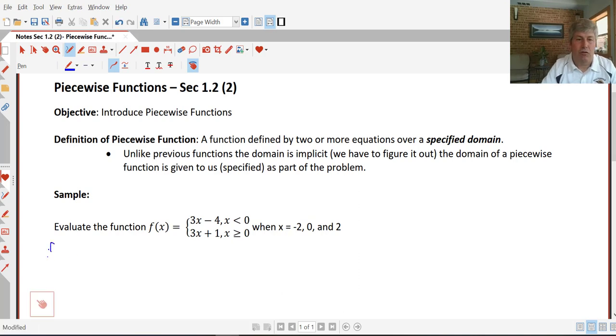For f of negative 2, for our input of negative 2, if we want x's less than 0, we have to use the top function, the 3x minus 4. So 3 times negative 2 minus 4, we put that in our function or in our equation for our function, and we get negative 10.